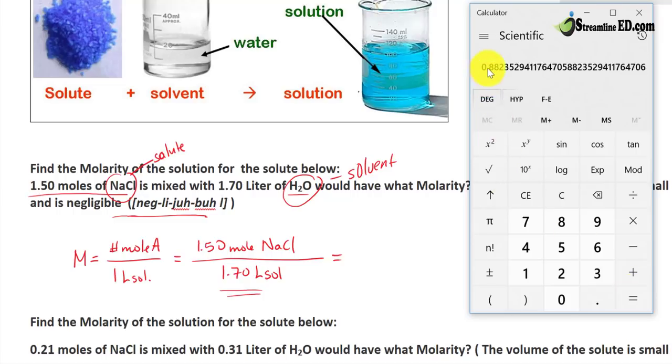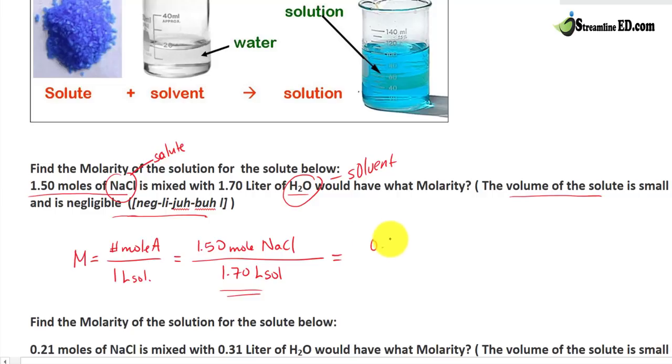1.50 divided by 1.70. And look what we have: 0.882. We always keep our answer to two decimal places. In this case, we would have 0.88. So what does that really mean? Well, you notice nothing really cancels out.